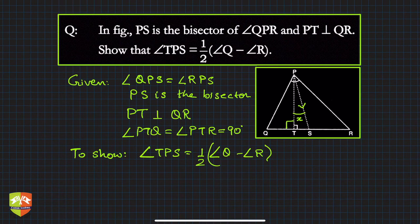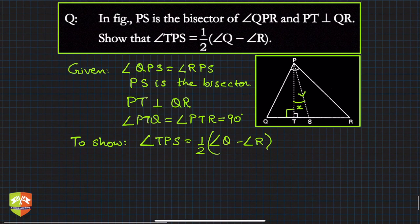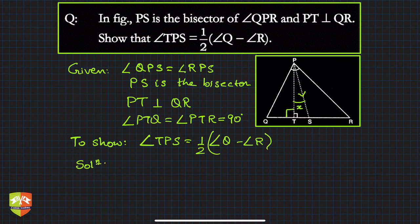So one angle is given 90 degrees, bisector is given, one extra information which we know is angle sum property. So can we use that to find the relationship? You can see there are two right angle triangles and we are going to use both of them, right?